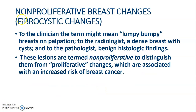The first category is non-proliferative breast changes or breast lesions, which include fibrocystic changes. Fibrocystic changes present as a lumpy-bumpy breast on palpation to the clinician, a dense breast with cysts to the radiologist, and a benign histologic finding to the pathologist. These lesions are termed non-proliferative to distinguish them from proliferative changes, which are associated with increased risk of breast cancer.